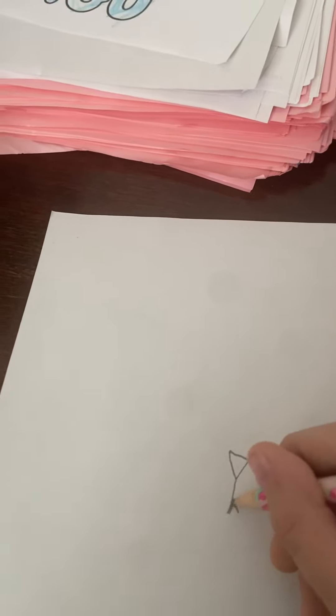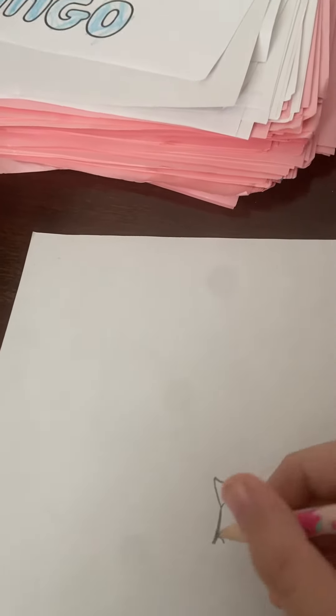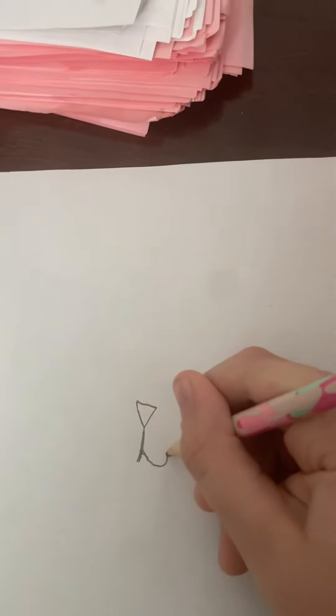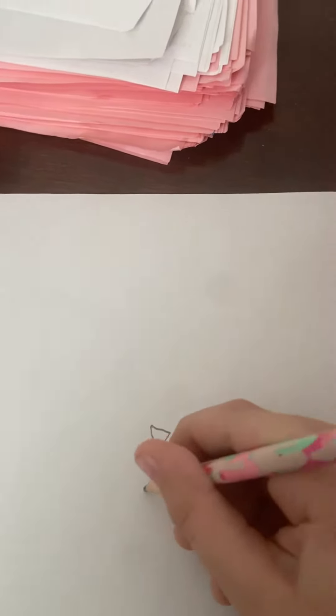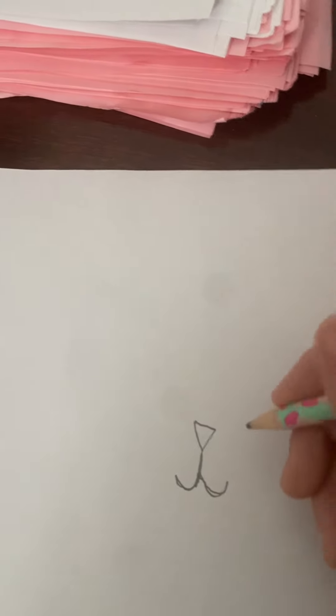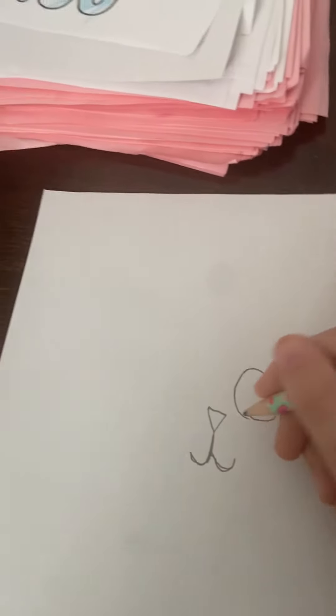spread like this, like that, and then put a half of a circle, then another half of a circle. Then we're going to make the eyes, so you're allowed to make this any way you want. So first